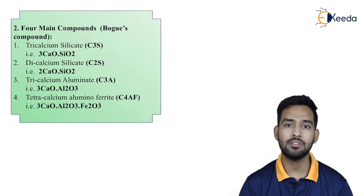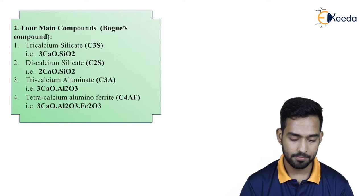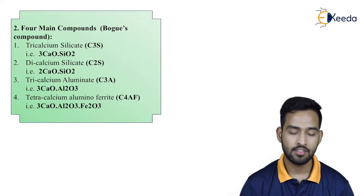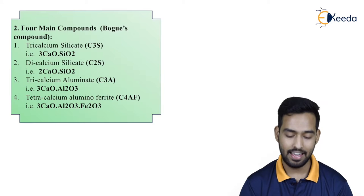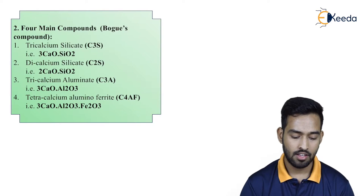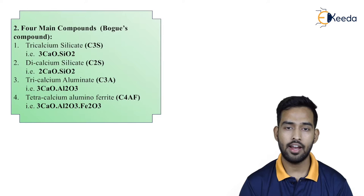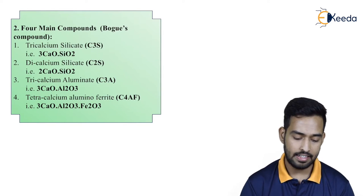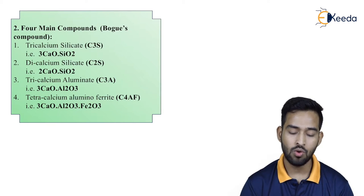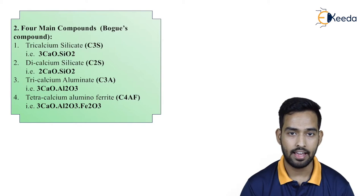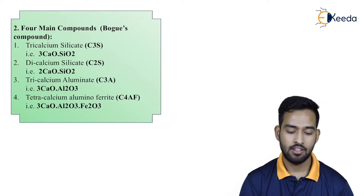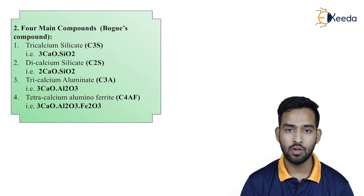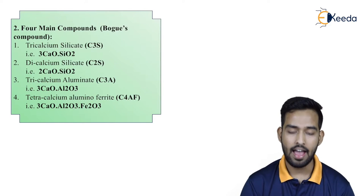Next is dicalcium silicate, that is C2S, and its chemical formula is 2CaO·SiO₂. Third is tricalcium aluminate, that is C3A, with formula 3CaO·Al₂O₃. And last is tetracalcium aluminoferrite, which is C4AF. These are the main 4 components of cement: C3S, C2S, C3A, and C4AF.